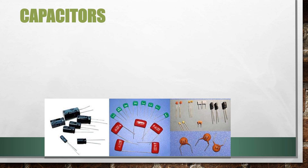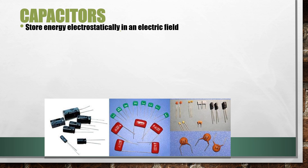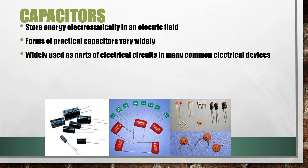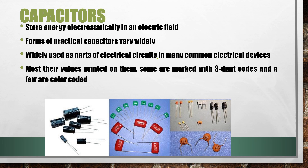What are capacitors? A capacitor is a passive two-terminal electrical component that is used to store energy electrostatically in an electric field. All practical capacitors contain at least two electrical conductors separated by a dielectric insulator. Capacitors are widely used as parts of electrical circuits in many common electrical devices. Many capacitors have their values printed on them; some are marked with a three-digit code and a few are color coded. They are typically marked with a C on a circuit board.